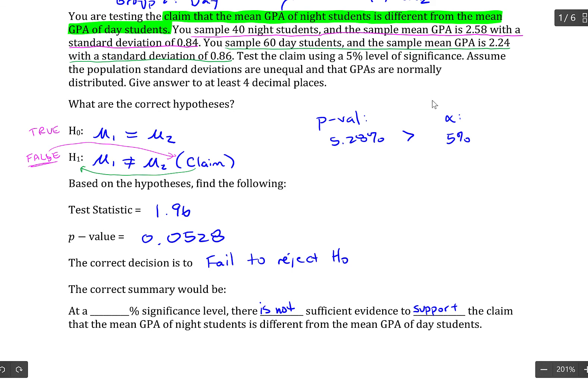Now, lastly, I added one additional blank, add a blank significance level, because I think it's important to indicate what level of significance you're using, because had we used a 10% level of significance, then the result would have changed. But at a 5% level of significance, there's not sufficient evidence to support the claim.